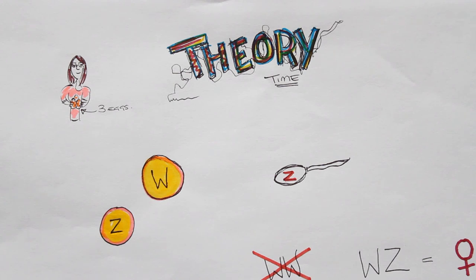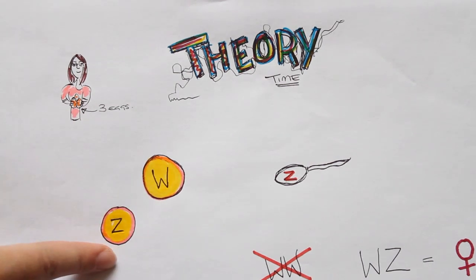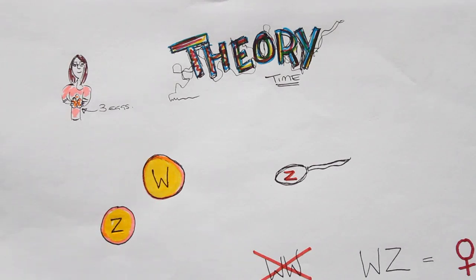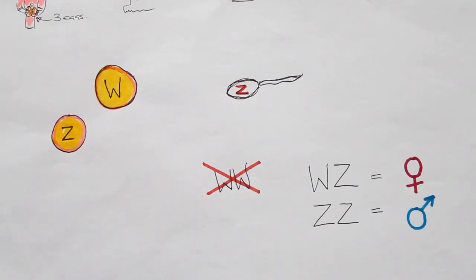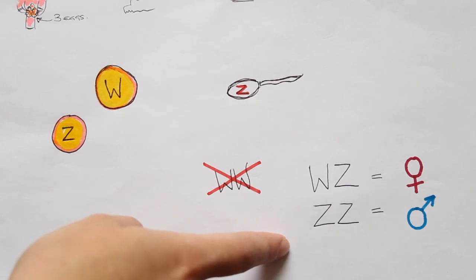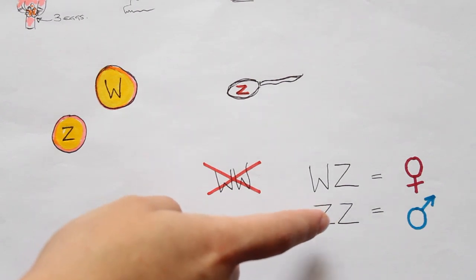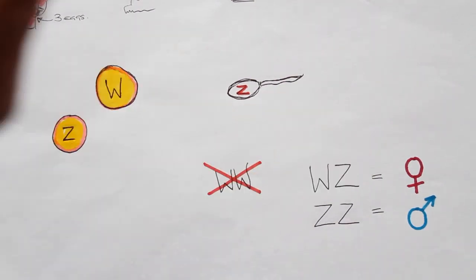When it comes to Komodo dragons, an egg from a female will carry one chromosome — either a W or a Z. When parthenogenesis takes place, the chromosome is duplicated. WW will not survive, but ZZ will, and that will be a male. WZ is a female.